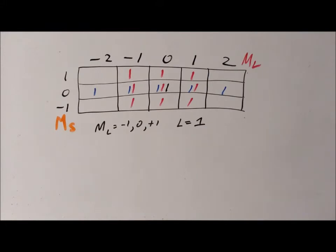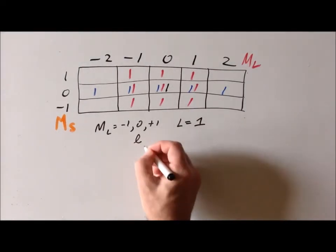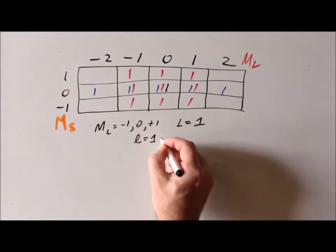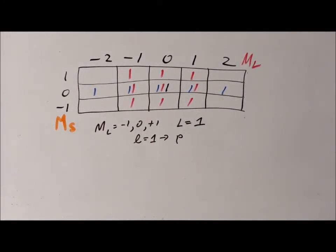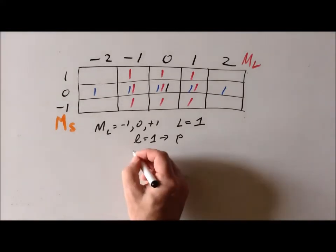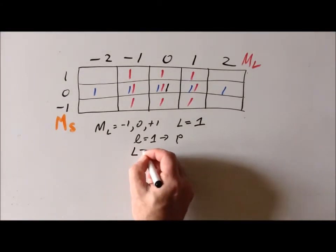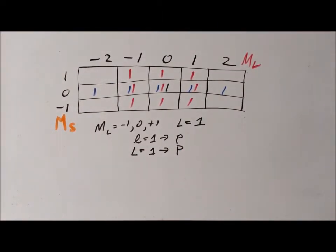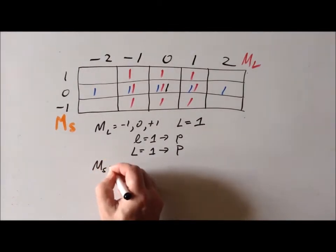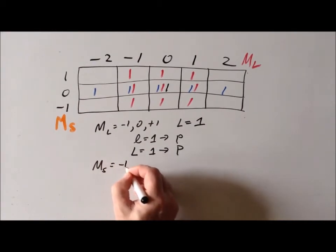Now that we have a big L value of one, we notice that in situations where small L is equal to one this corresponds to a p orbital with a small p. Following by analogy, in cases where big L is equal to one, we represent that with a capital P value. So that is our angular momentum term. Similarly, we look at the M sub S values, and we notice the M sub S values likewise go from minus one to zero to plus one.